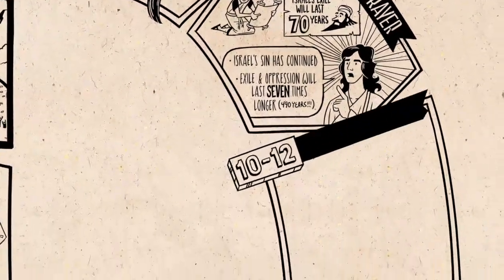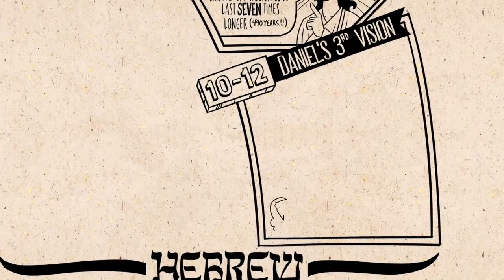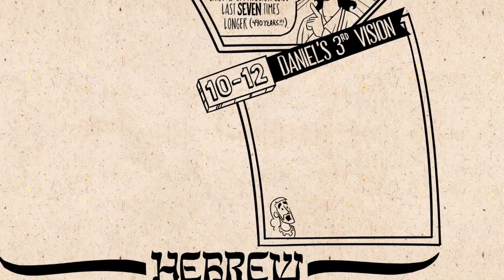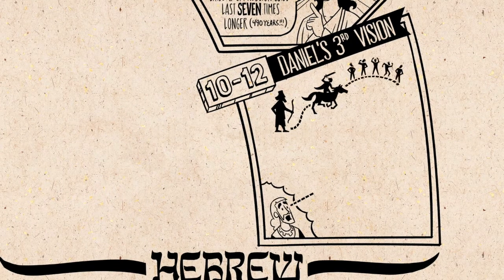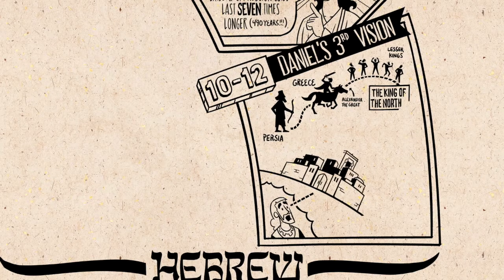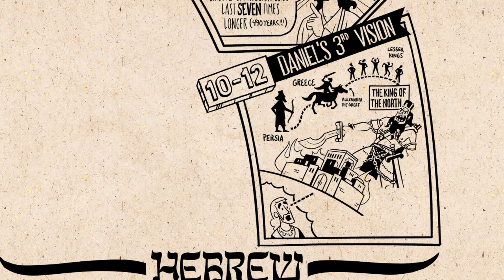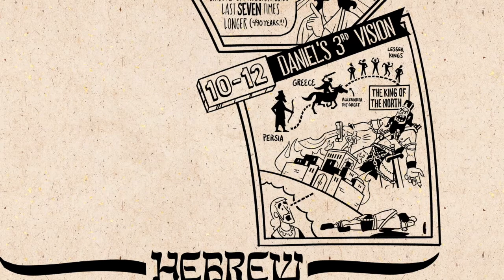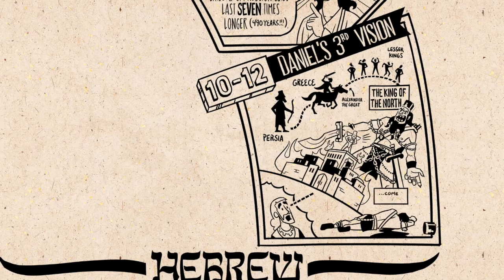Daniel is deeply disturbed by this and has one final vision. He's shown the same sequence of kingdoms — Persia, then Greece and Alexander the Great, followed by lesser kings — all leading up to a final king of the north who will invade Jerusalem, set up idols in the temple, and exalt himself above God. But then, all of a sudden, this king comes to ruin.